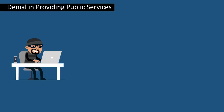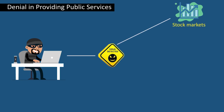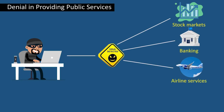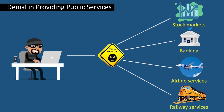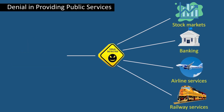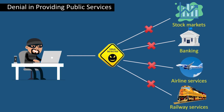Third, denial in providing public services. An attacker can cause disruption in any public domains such as the stock markets, banking, airline services, and railway services by blocking access to valuable information for any authorized users in their organization.